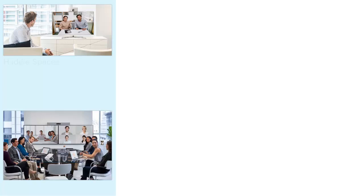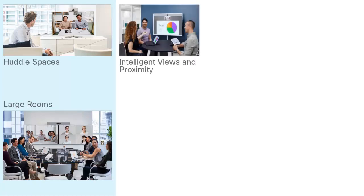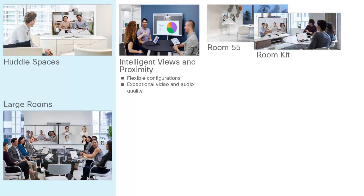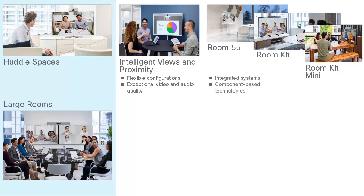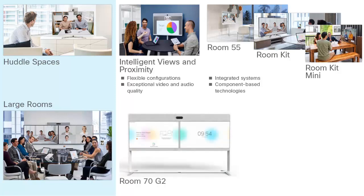Cisco has the solutions and components to help create the right video collaboration environment for rooms of all sizes, from huddle spaces to large rooms. Cisco Intelligent Views and Proximity are available with all of our room systems for the best possible connections and content sharing experience. Customers will experience flexible configurations and exceptional video and audio quality. For teams of one to six people, we offer the Room 55, Room Kit, and Room Kit Mini for huddle spaces — both integrated systems and component-based technologies that easily assemble in less than 30 minutes. The Room 55 Dual and Room Kit Plus complement any medium-sized space for 12 to 14 people. For your customers' largest spaces, look to the Room 70 G2 or the Room Kit Pro.